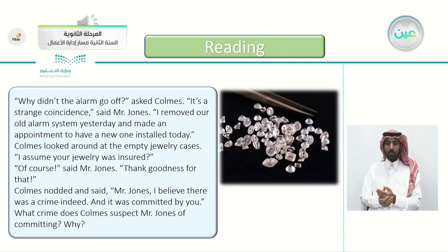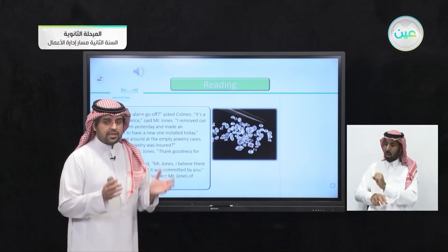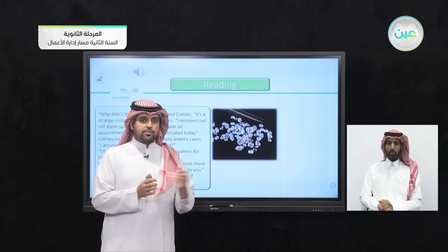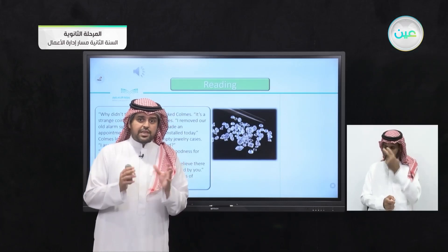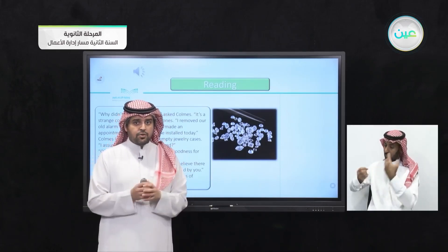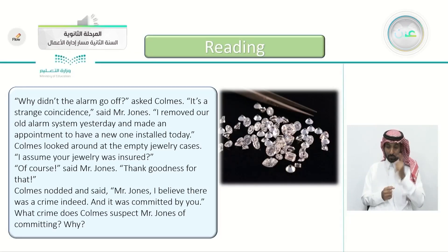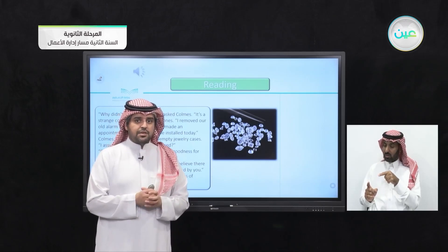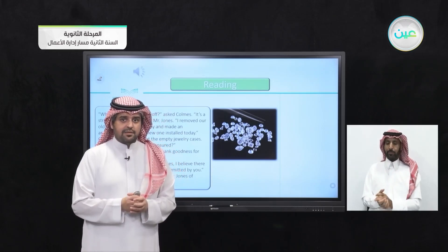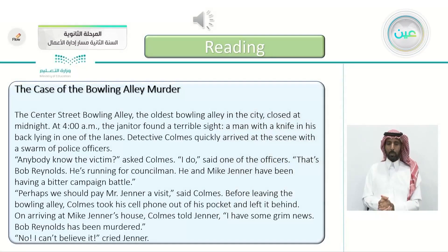What crime does Combs suspect Mr. Jones of committing, and why? Mr. Jones is the owner of the jewelry store. Once he called the police, Detective Combs arrived and saw the glass outside on the pavement. When he asked about insurance and Mr. Jones confirmed it, this raised Combs's suspicion. Based on what evidence did he accuse Mr. Jones? We'll be answering this later.